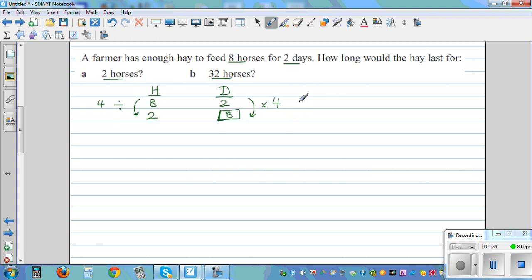A different way of checking the answer is you can make a third column H times days. So H, 8 times 2 is 16 and 2 times 8 is 16. So again this is decreasing. If the number of horses is decreasing, the number of days the same hay would last would increase in an inverse manner. So this is decreasing by a quarter, so this would be increasing by 4 times inversely.